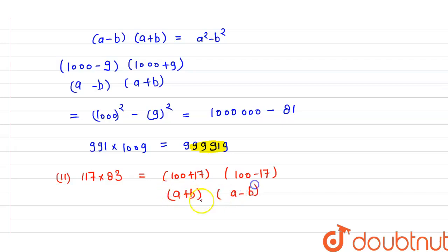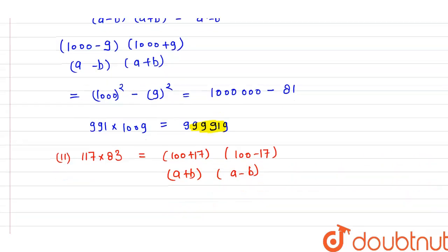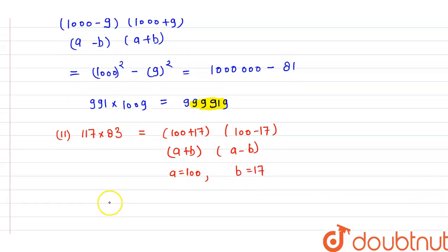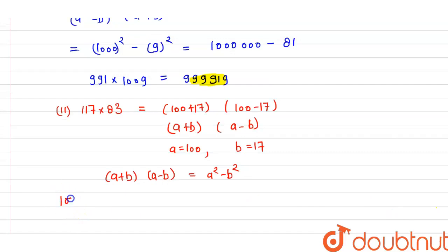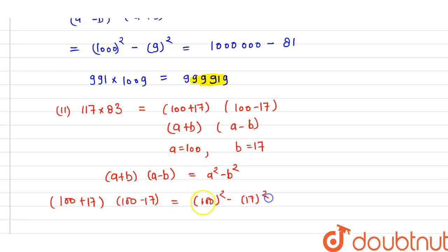In place of a we have 100, and in place of b we have 17. We know the algebraic identity: (a plus b) in one bracket and (a minus b) in another bracket equals a squared minus b squared. So by using this identity, we can write it as (100 plus 17) into (100 minus 17), which equals 100 squared minus 17 squared.